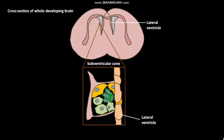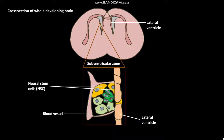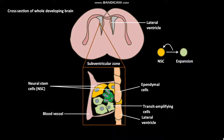The subventricular zone is the site of stem cells, or stem cell niche. These stem cells form neural precursors. Neural stem cells, or NSC, are a subset of astrocytes. NSC are in contact with blood vessels and adjacent ependymal cells. Both blood vessels and ependymal cells provide signals or direct contacts that maintain the stem cell population.